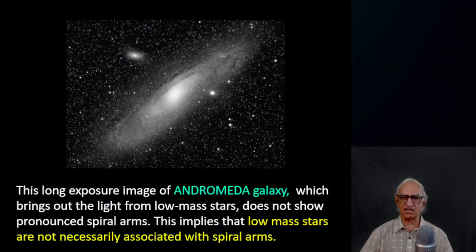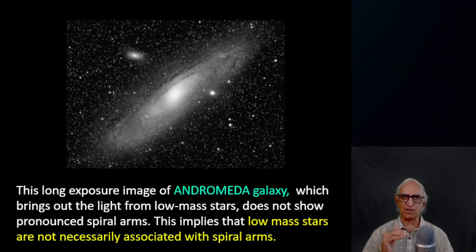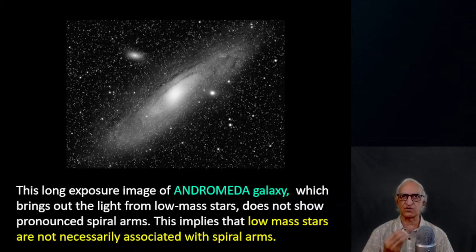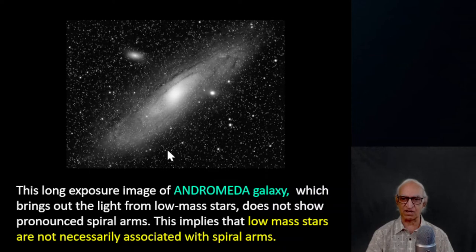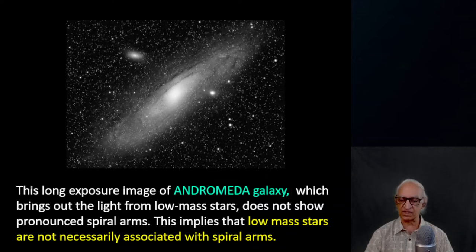Look at this long-exposure image of the Andromeda galaxy. What you see is a more or less continuous distribution of stars — it looks like an omelet. The spiral structure is not very pronounced. When you expose the galaxy for long periods of time, you pick up the light from low-mass stars, which are not very luminous. In a short exposure, you pick up only the bright stars. In a long exposure, you pick up all stars including the low-mass ones, and there is no pronounced spiral structure.